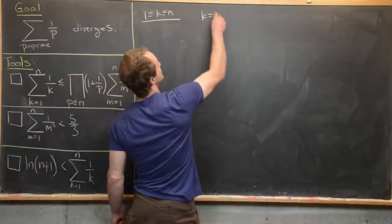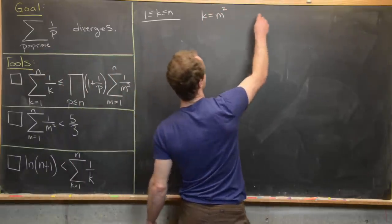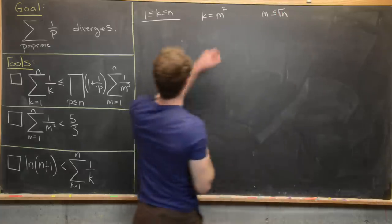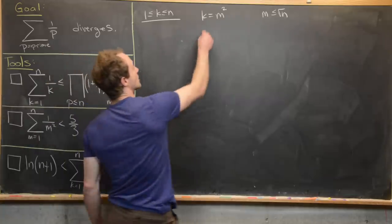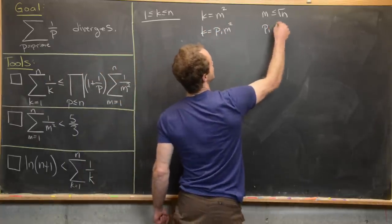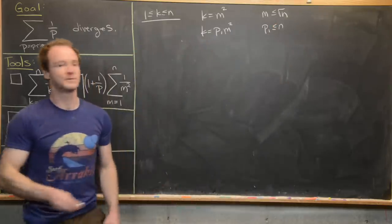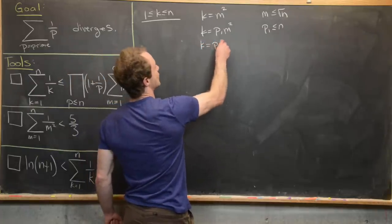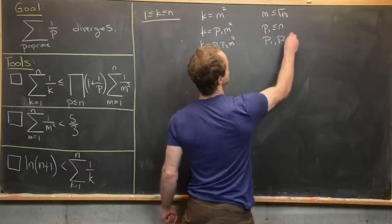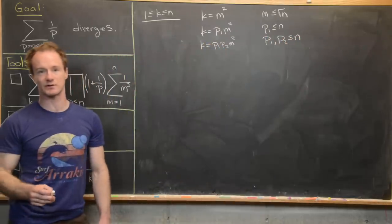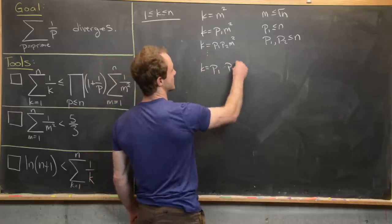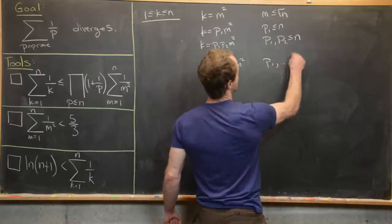So k equals m squared in the first case, where m is less than or equal to the square root of n. Or k equals p₁ times m squared, where p₁ is some prime less than or equal to n. Or k equals p₁ times p₂ times m squared, where p₁ and p₂ are distinct primes less than or equal to n, and so on — k could be a product of r different primes all less than n.